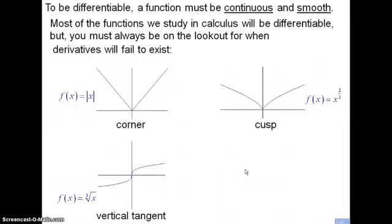Functions can also have vertical tangents. The cube root of x has a vertical tangent at x equals zero. When I take the derivative of this function, I cannot evaluate f prime of zero — there is no output there because it's undefined.